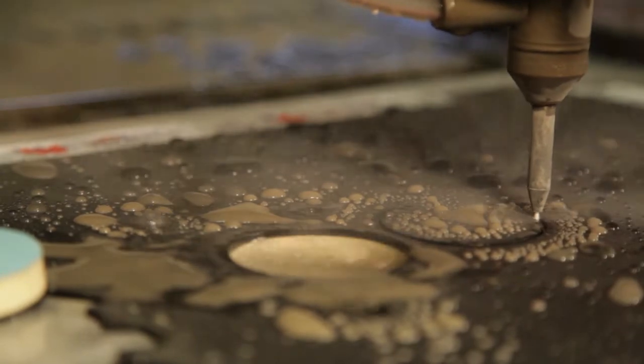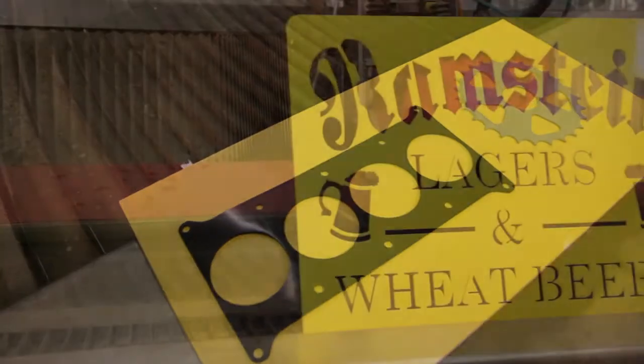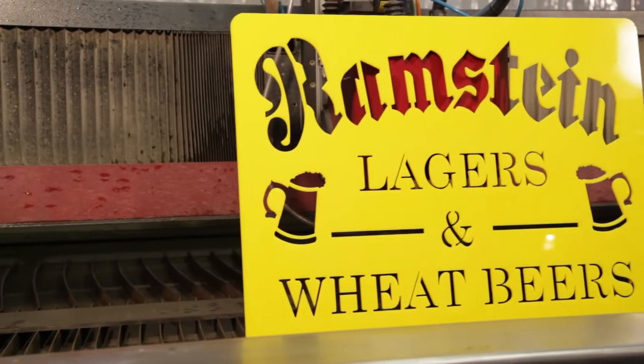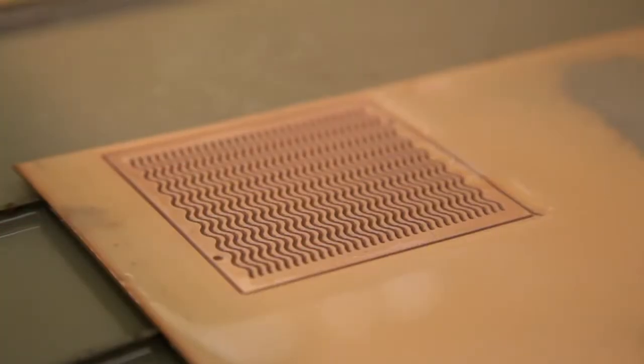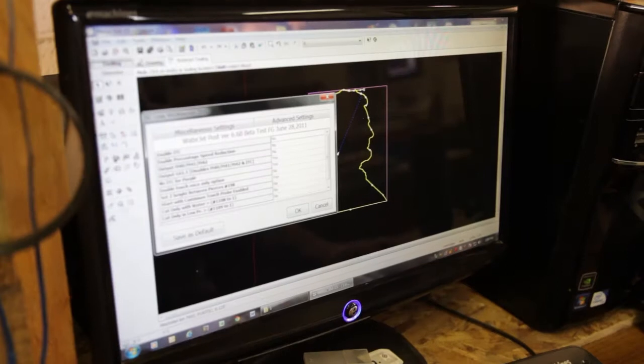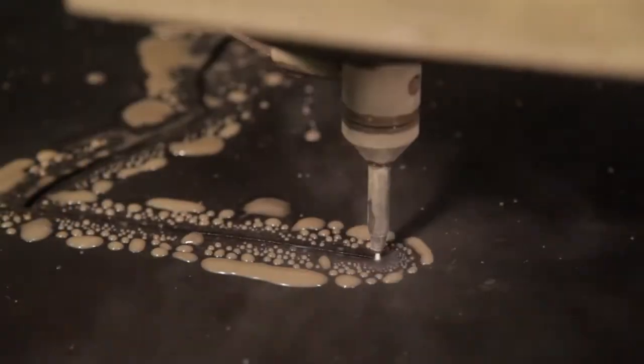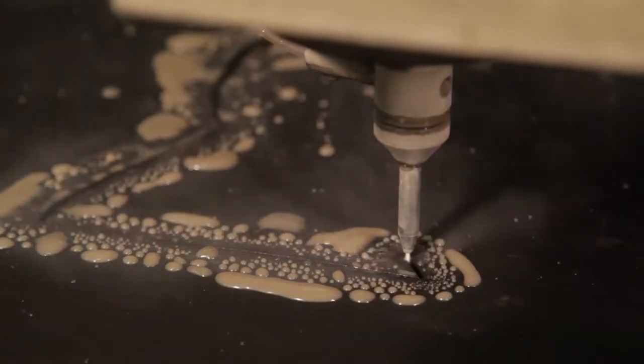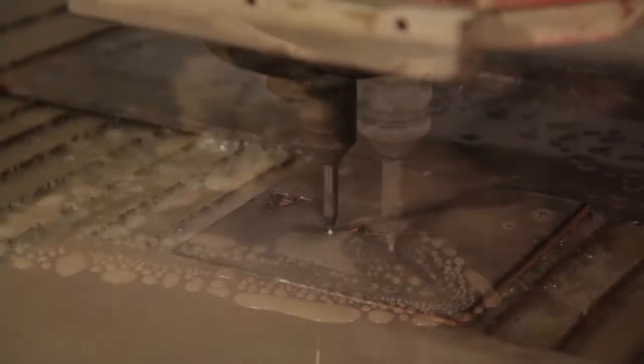With our water jet system, we can create custom cut products for all types of industries. We can cut designs from most customer-supplied computer CAD, blueprint and art files. We have the ability to cut custom materials up to five and a half by ten feet and up to five inches thick.